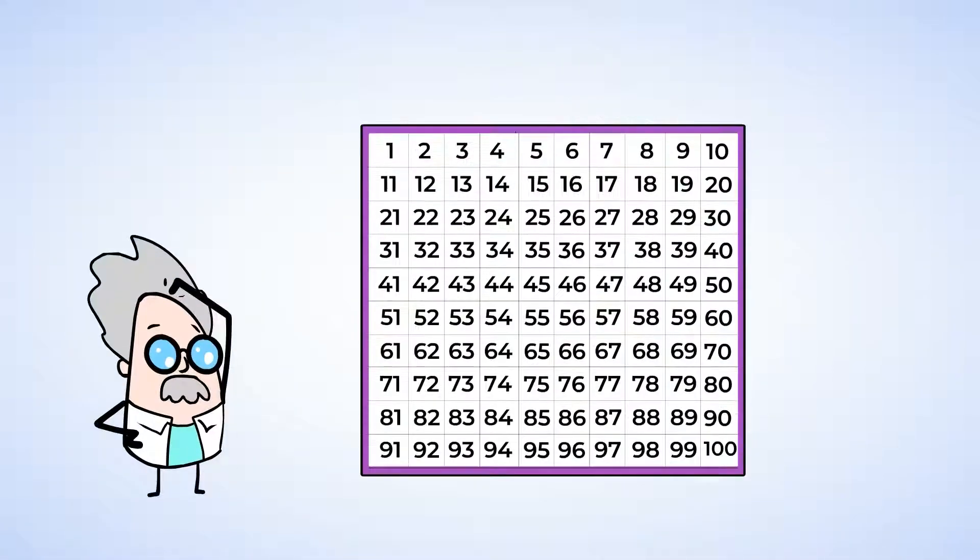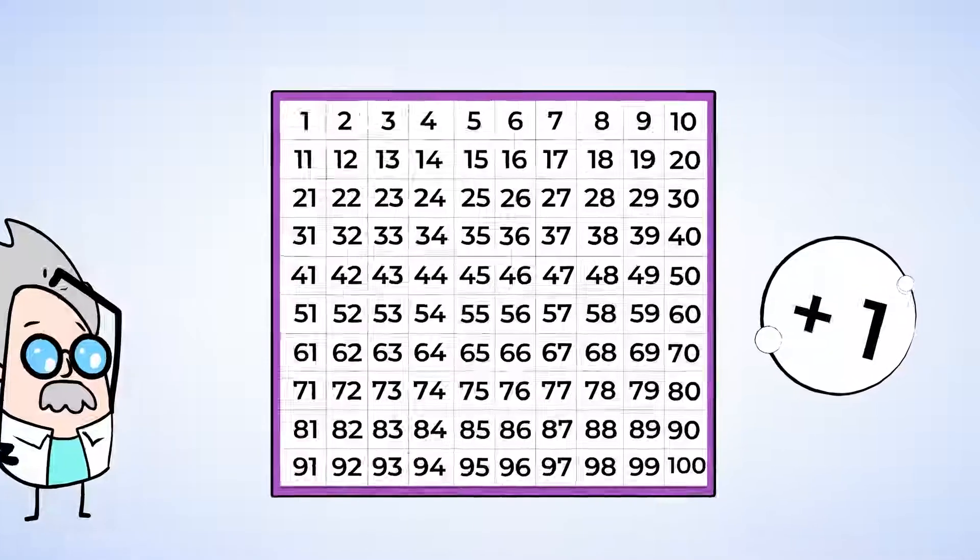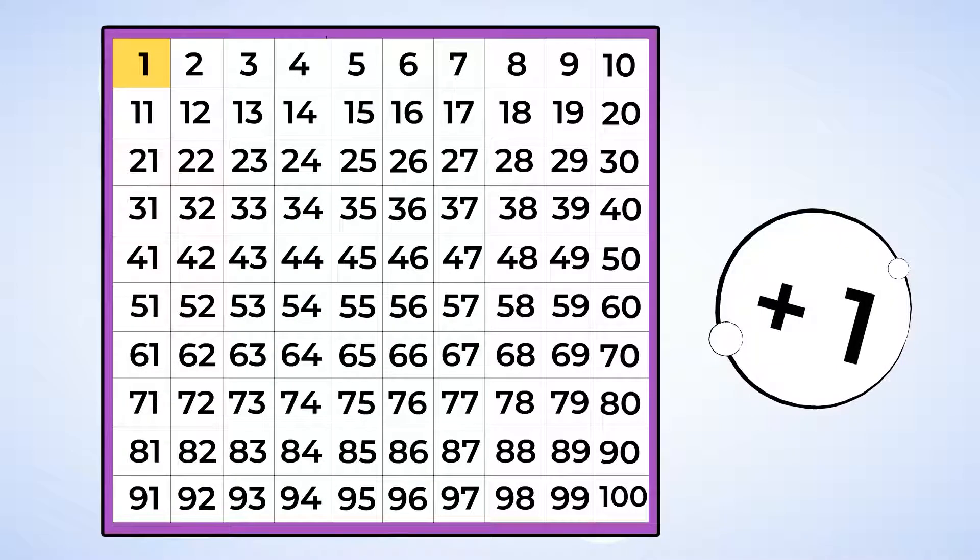Just like when we use the hundreds chart for counting one more from the smaller numbers, you can use it to count one more for bigger numbers too. In fact, when you count, you always count one more than the last number. One. Then one more is two. One more is three. One more is four. One more is five. And so on.